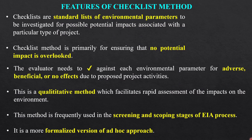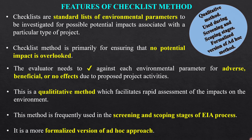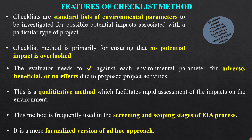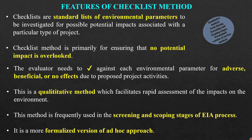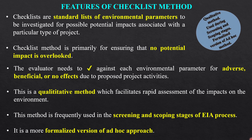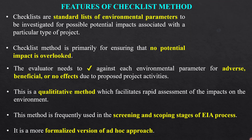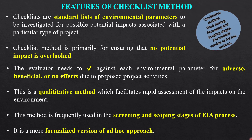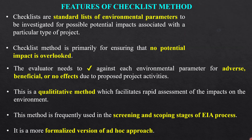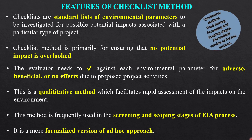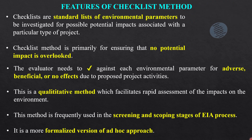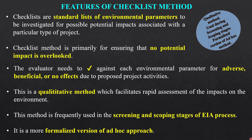Checklist methods are standard lists of environmental parameters to be investigated for possible potential impacts associated with a particular project, to ensure that no potential impact is overlooked. The evaluator simply tick-marks each environmental parameter for adverse, beneficial, or no impact due to the project activity. It is a qualitative method, frequently used for the screening and scoping stage of EIA, and is the formalized version of the ad hoc approach.